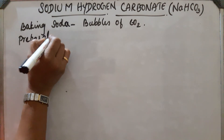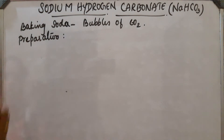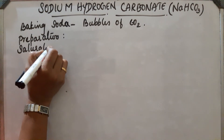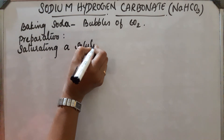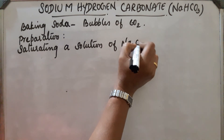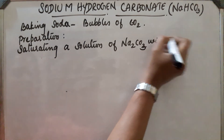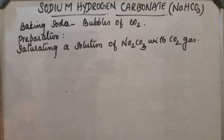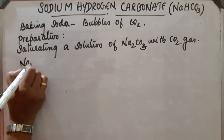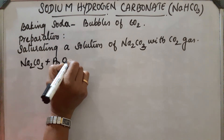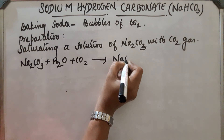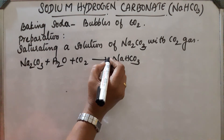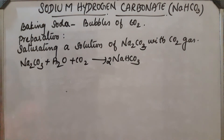Saturating sodium carbonate with carbon dioxide gas: Na₂CO₃ solution and carbon dioxide react to form NaHCO₃. NaHCO₃ is less soluble in water and precipitates out as a white solid.